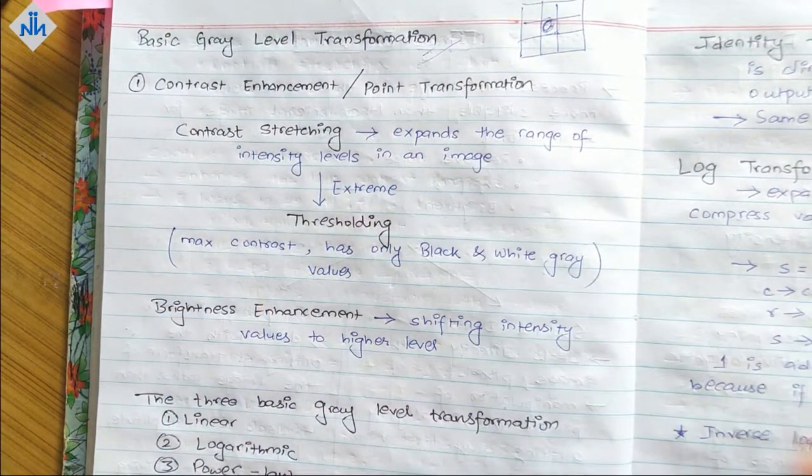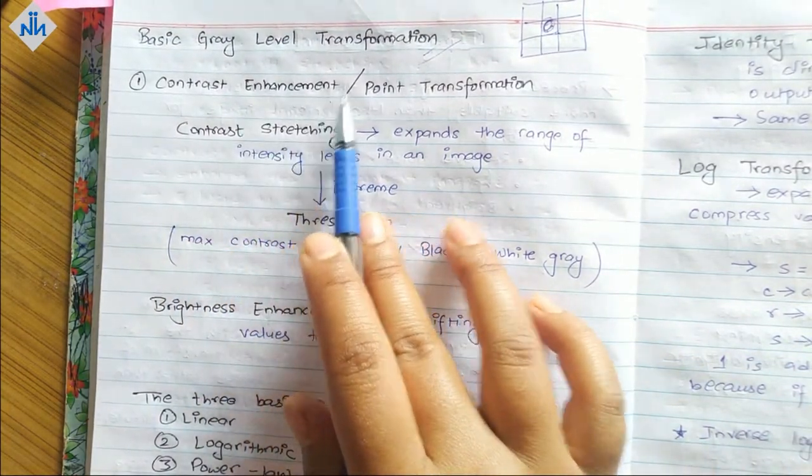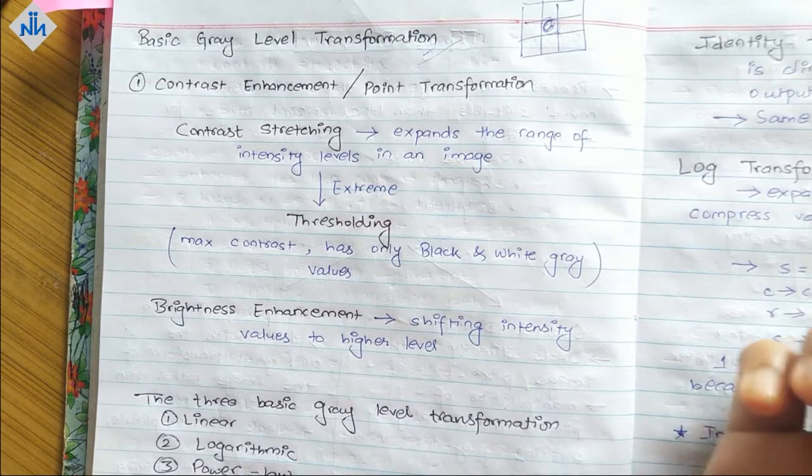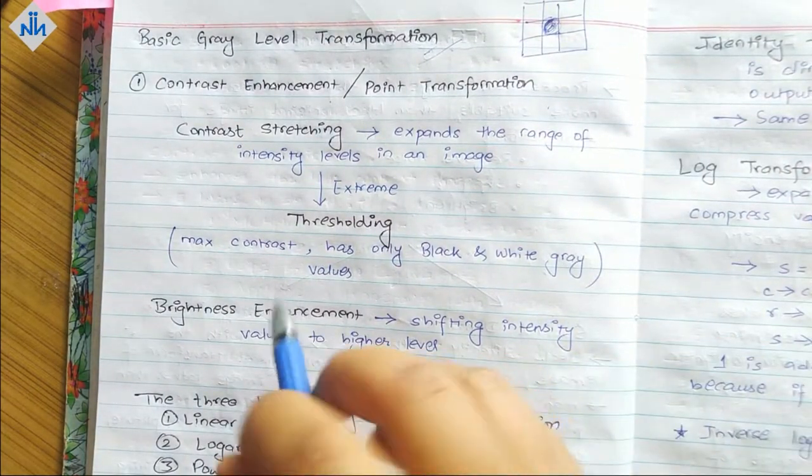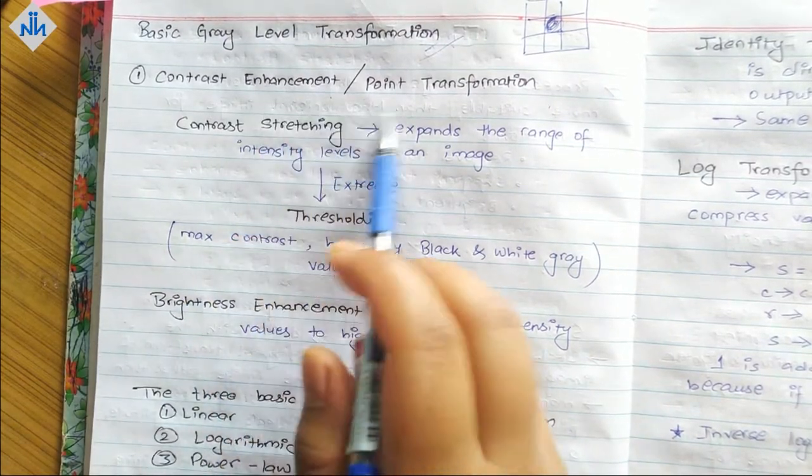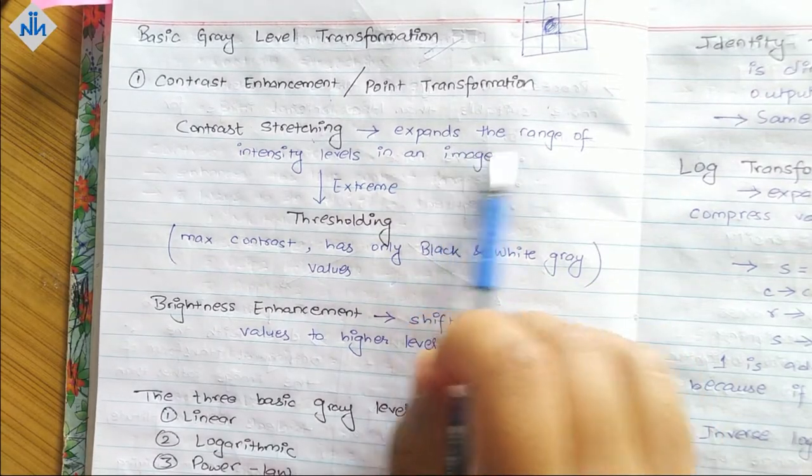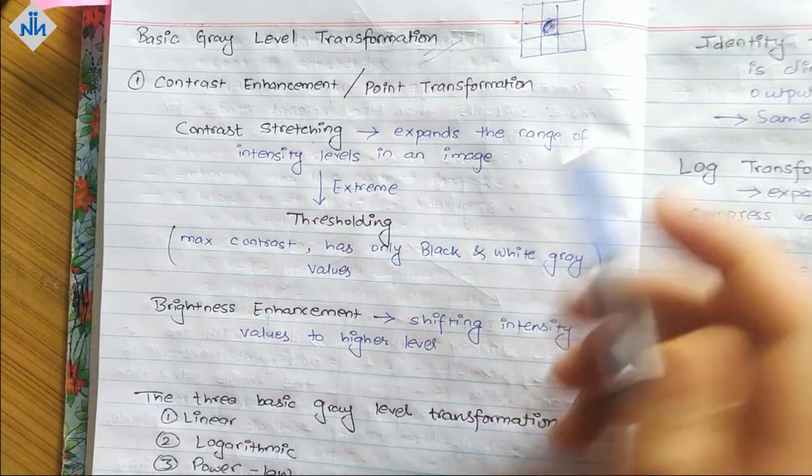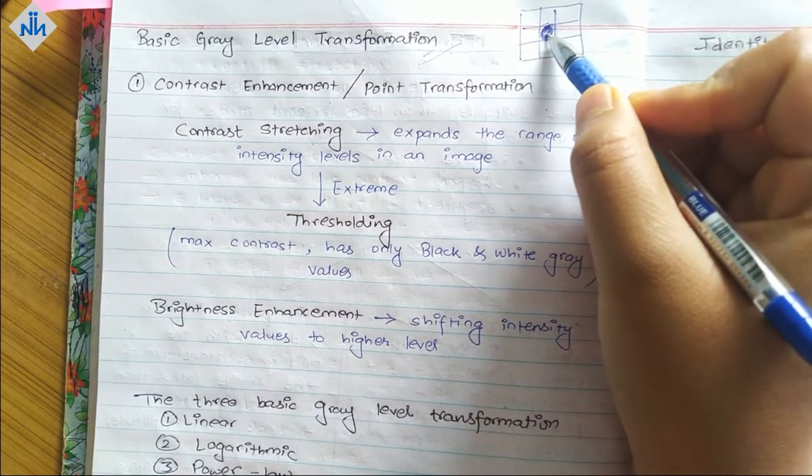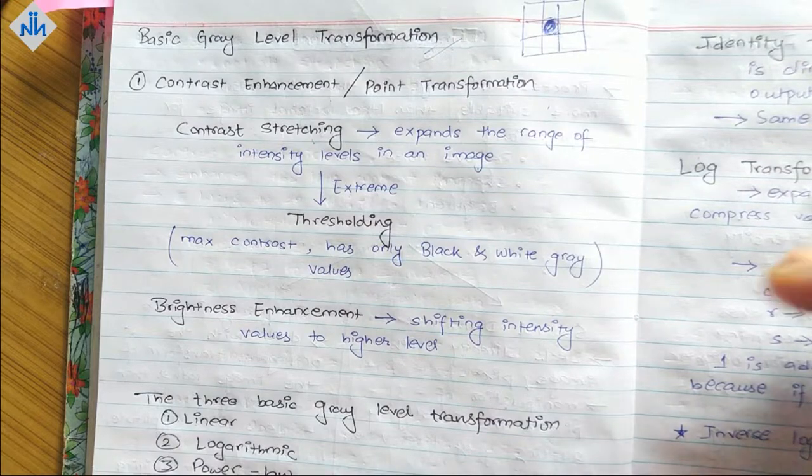as point transformation. We take a point and transform it to make it better. Inside this we have contrast stretching, which expands the range of intensity levels in an image. It expands the range of intensity levels, making the darker ones even darker and the brighter ones even brighter.